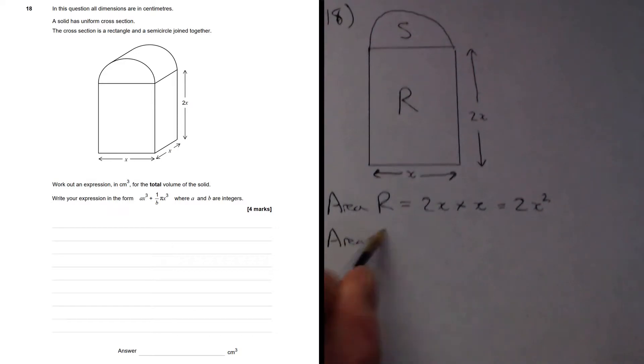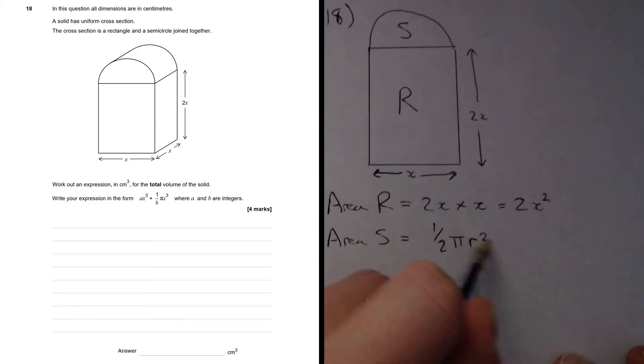What about the area of the semicircle? Well, it's going to be half the area of a circle, and the formula for that is going to be half pi r squared. But what is r? r is the radius.